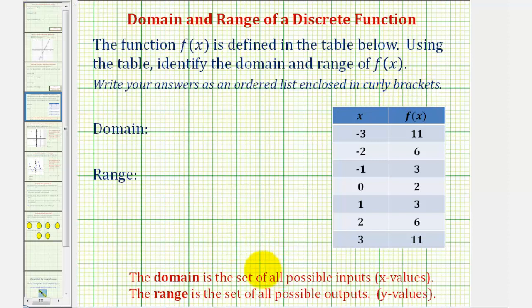For review, the domain is a set of all possible inputs, or in this case, the x values. And the range is a set of all possible outputs, or y values, which would be the function values.